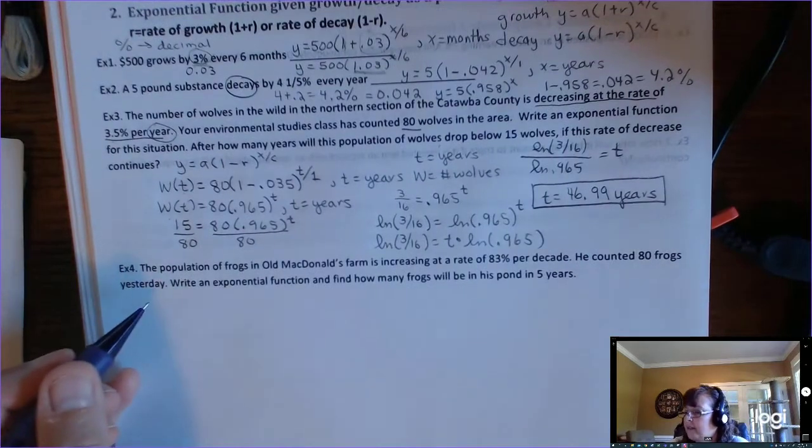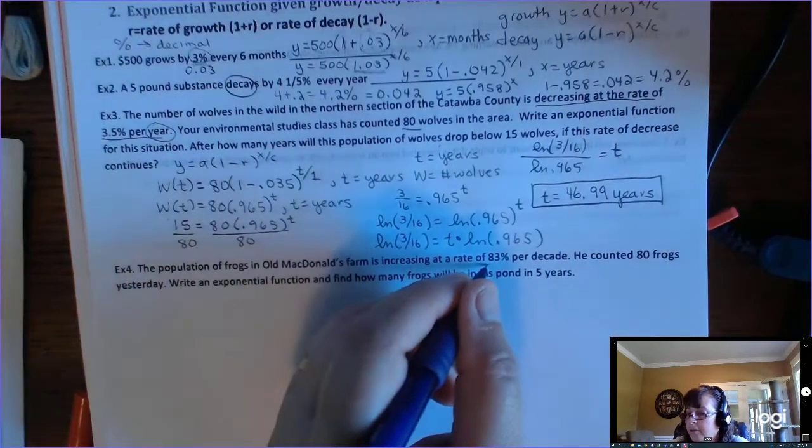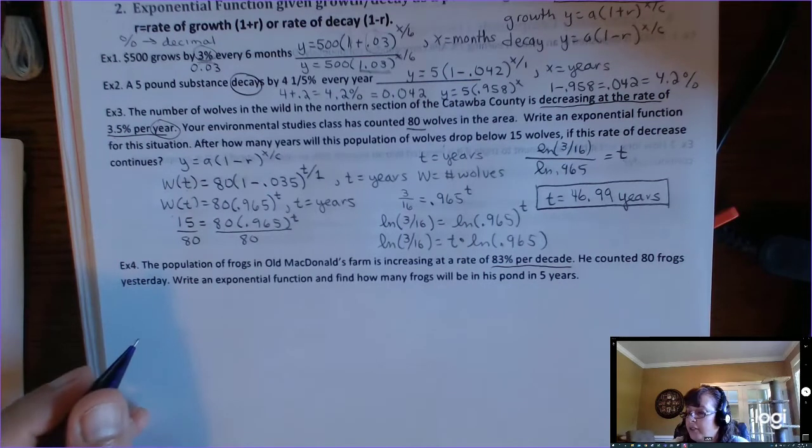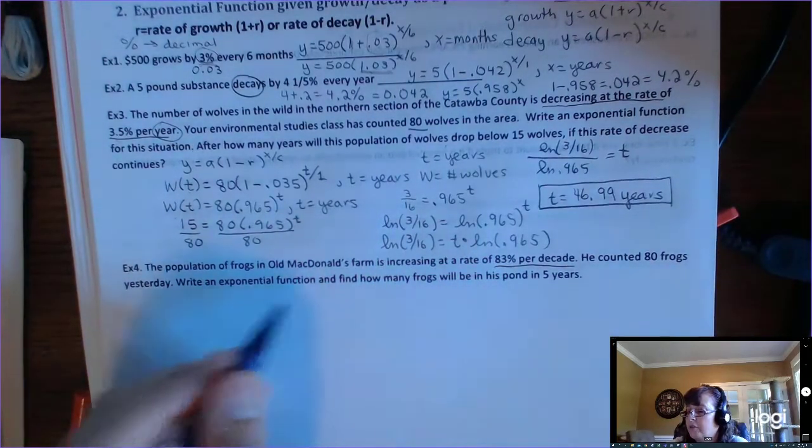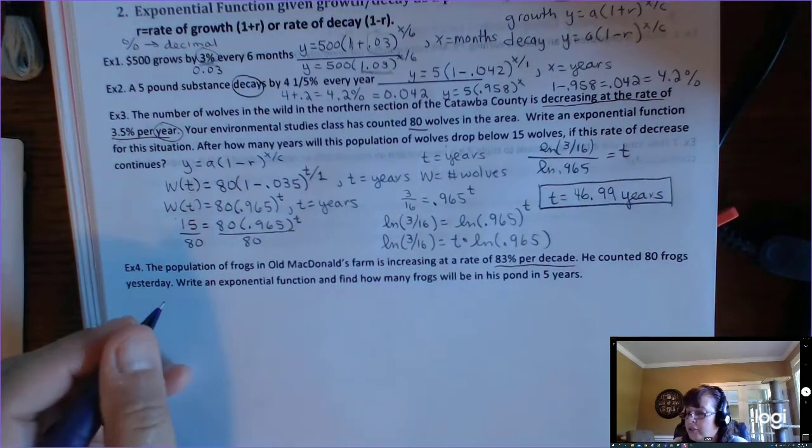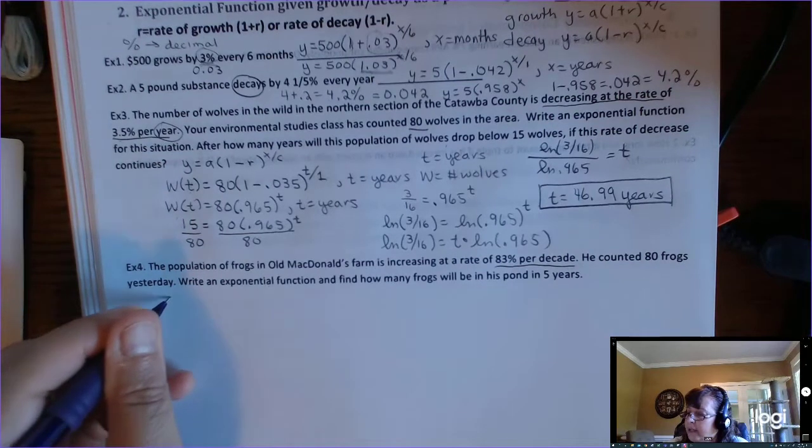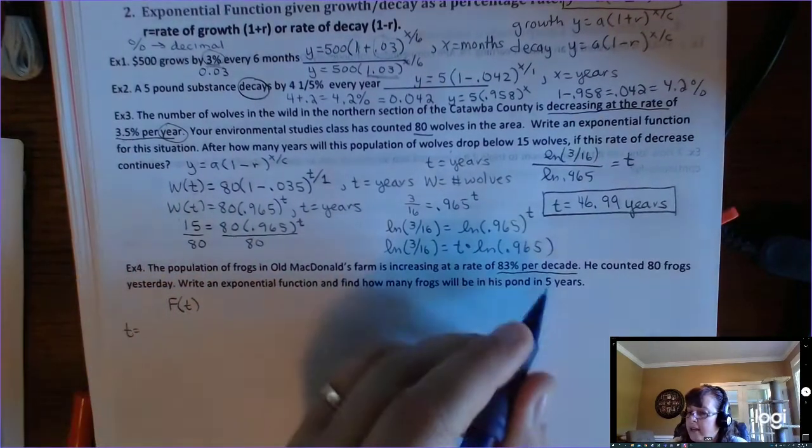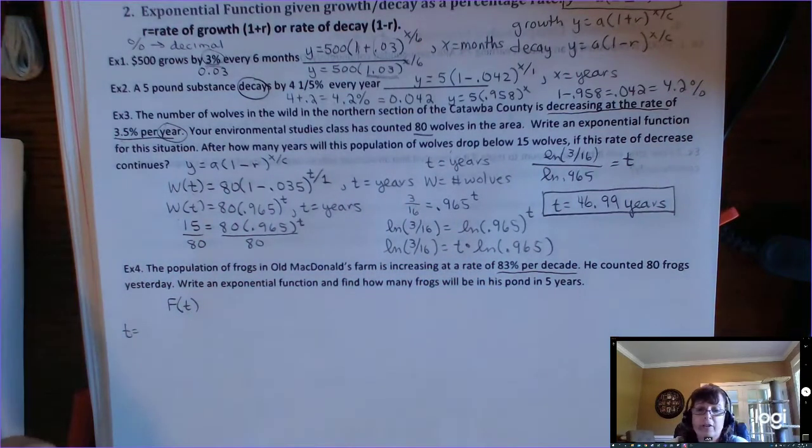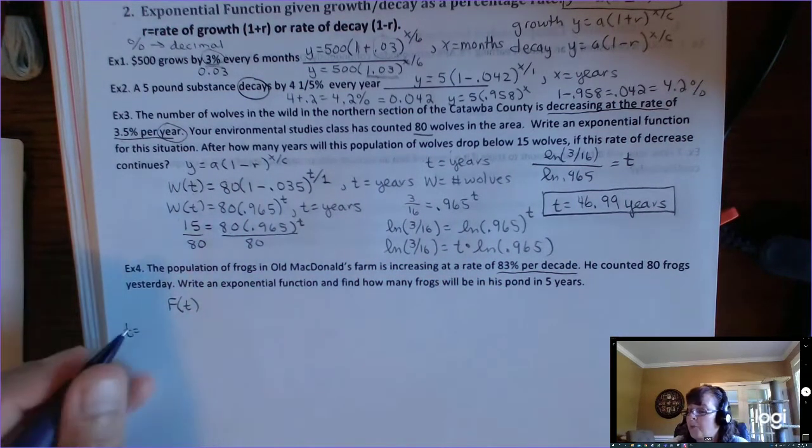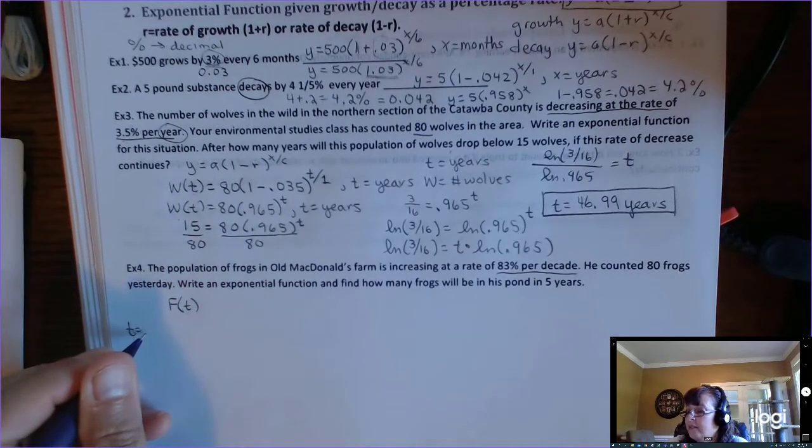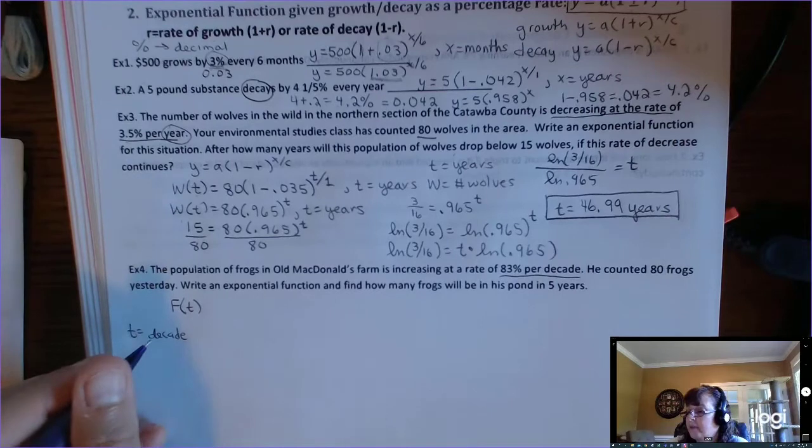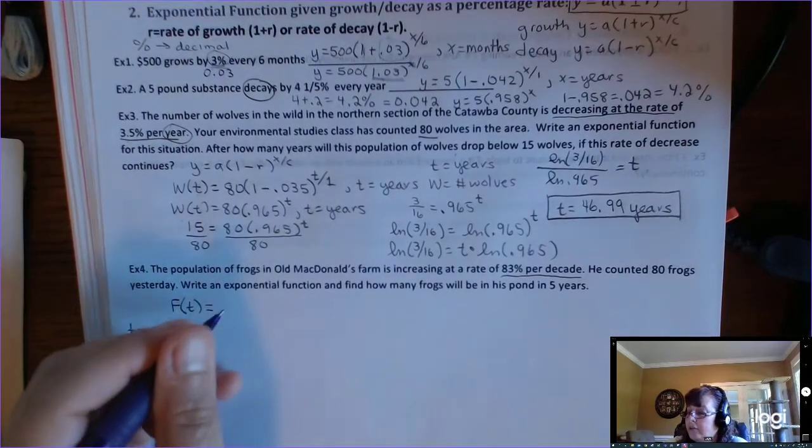Let's look at another one. The population of frogs in Old MacDonald's Farm is increasing at a rate of 83% per decade. He counted 80 frogs yesterday. Write an exponential function and find how many frogs will be in his pond in five years. So first thing we have to do is find the function. Then we'll use it to answer the question. So this one, let's say it's f of t. So your input is t and it's time in. Now this is interesting because it says 83% per decade. So you have choices. I'll do it both ways so you can see why it's important to tell people what t is. So let's let t be decades first. So every 10 years, every decade.